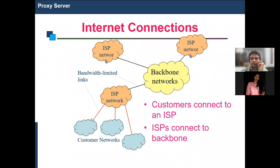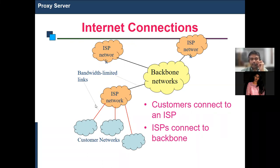From your customer network, connecting to the ISP network happens through a proxy server — a server kept on the customer side. The ISP network acts as your proxy server. From the customer, traffic goes to this proxy server, then to the backbone network, then to the target server, and information is fetched and returned to you. Behind every single click, a lot of work is happening at the background.